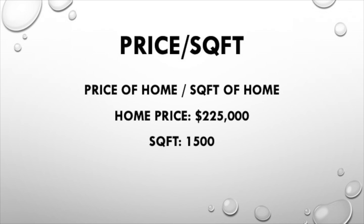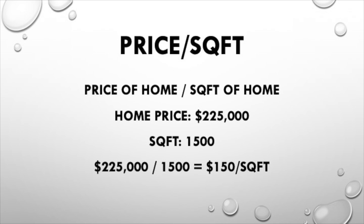So if the home price is $225,000 and the square footage of the home is 1,500, then $225,000 divided by 1,500 is $150 a foot. That means every square foot is valued at $150. Price per square foot allows you to look at homes apples to apples on an equal playing field because you're looking at the price per foot, not just the price.